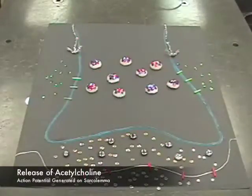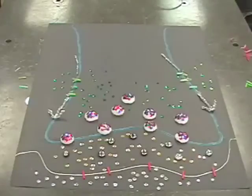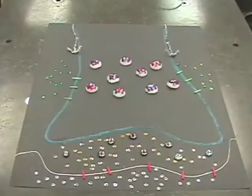Now we'll take a look at how an action potential traveling down a motor neuron is converted into an actual muscle contraction. As the action potential arrives at the synaptic knob, it opens calcium channels in the membrane, thus allowing calcium in.